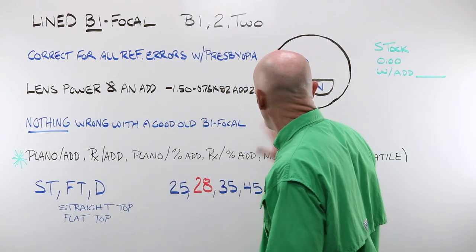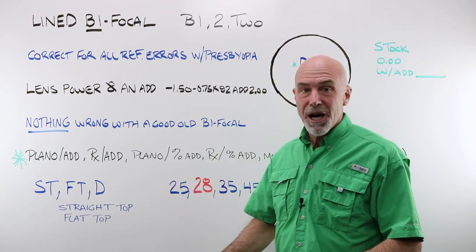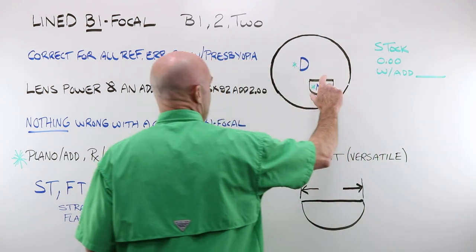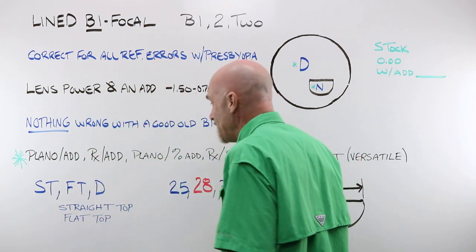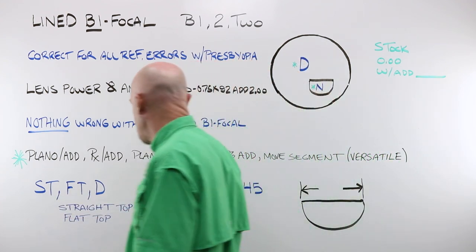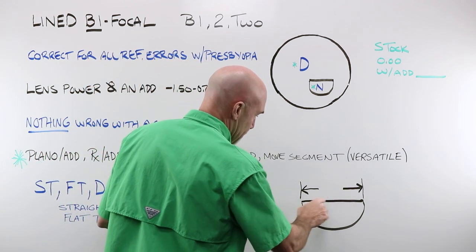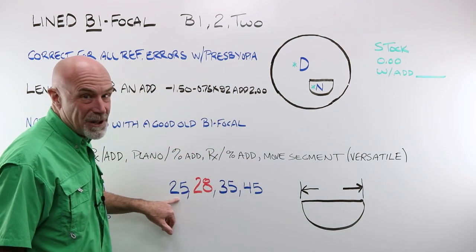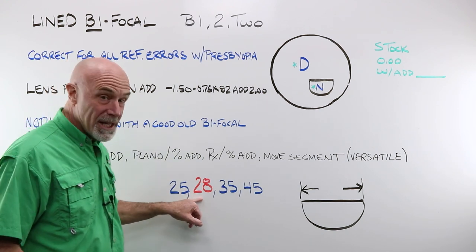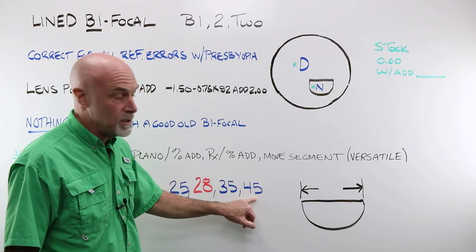There is a little bit of language that goes with bifocals, lined bifocals. ST is straight top. FT is flat top. Every once in a while you'll see a D. If you turn this segment, rotate it around, it looks like a D. These are all interchangeable. You'll hear different people use the different terms. ST is the more common one you'll see. Bifocals are measured this way. Plug in the number. You may find some 25s out there somewhere on the dusty back shelf of a lab somewhere. They used to be. 28 is the industry standard. And then there are 35 and 45 millimeter ones out there.